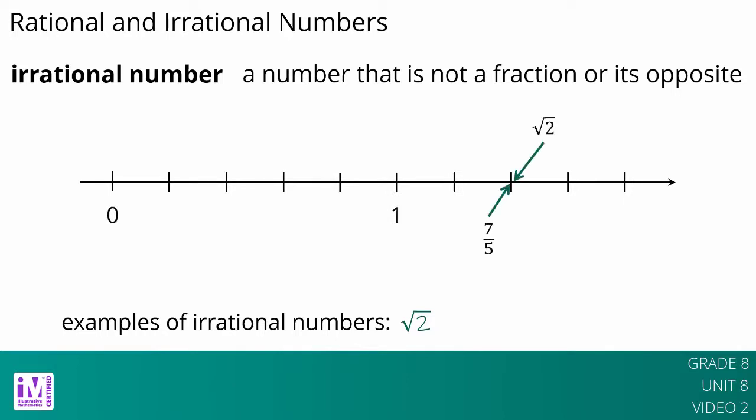It has a location on the number line, and its location can be approximated by rational numbers. But since the square root of 2 cannot be written using whole numbers a and b in the form a over b, it cannot be found on a number line by dividing this segment from 0 to 1 into b equal parts and going a of those parts away from 0.